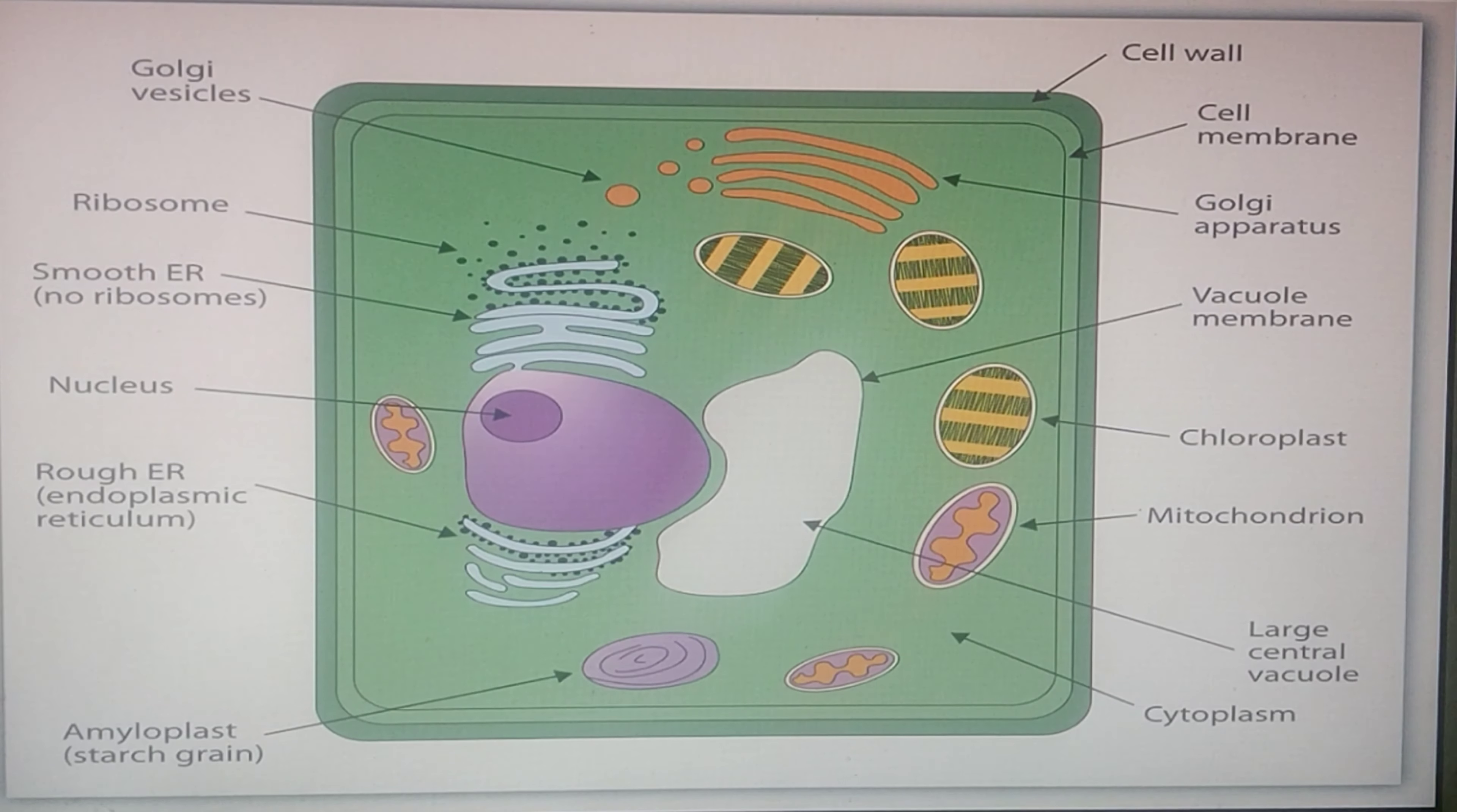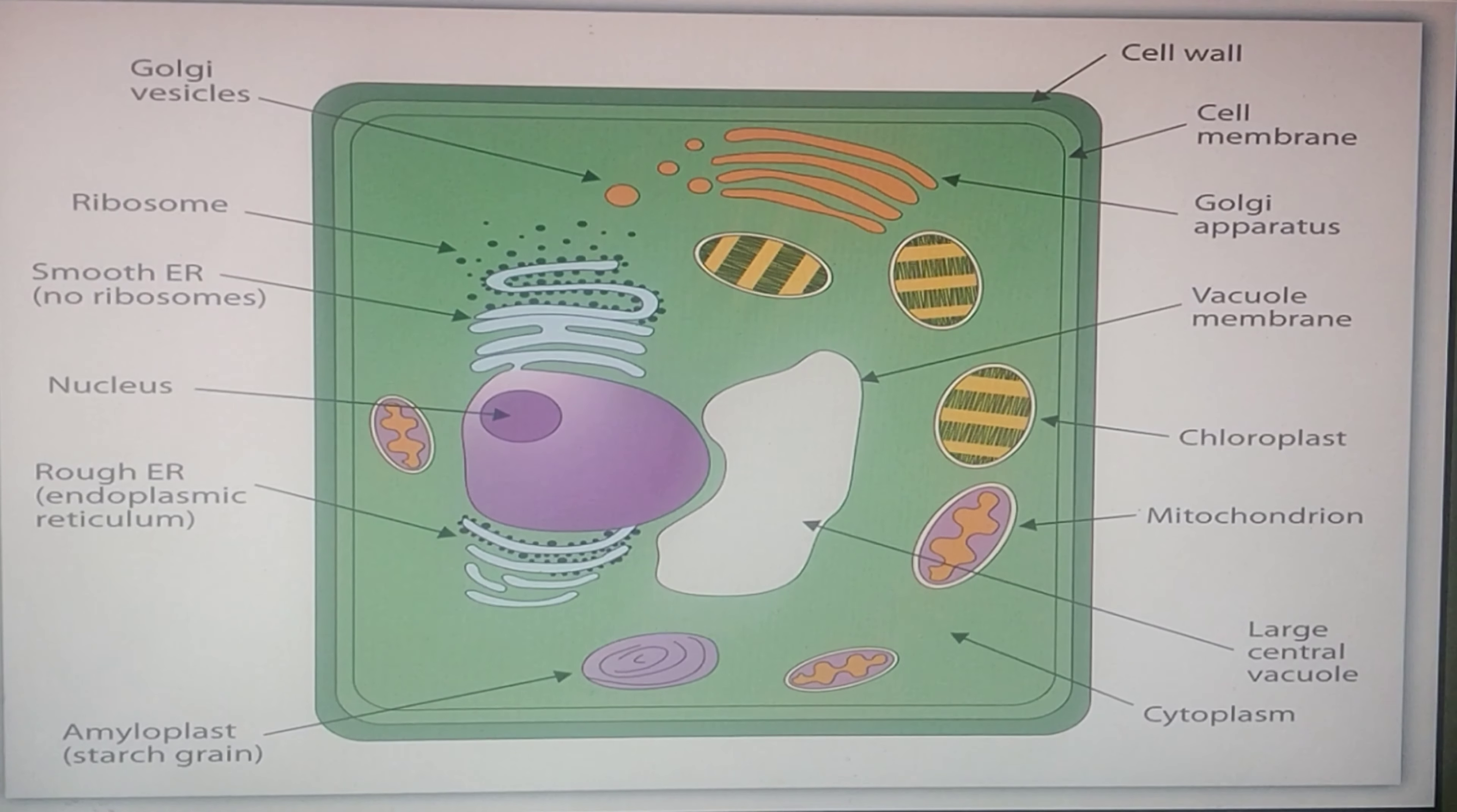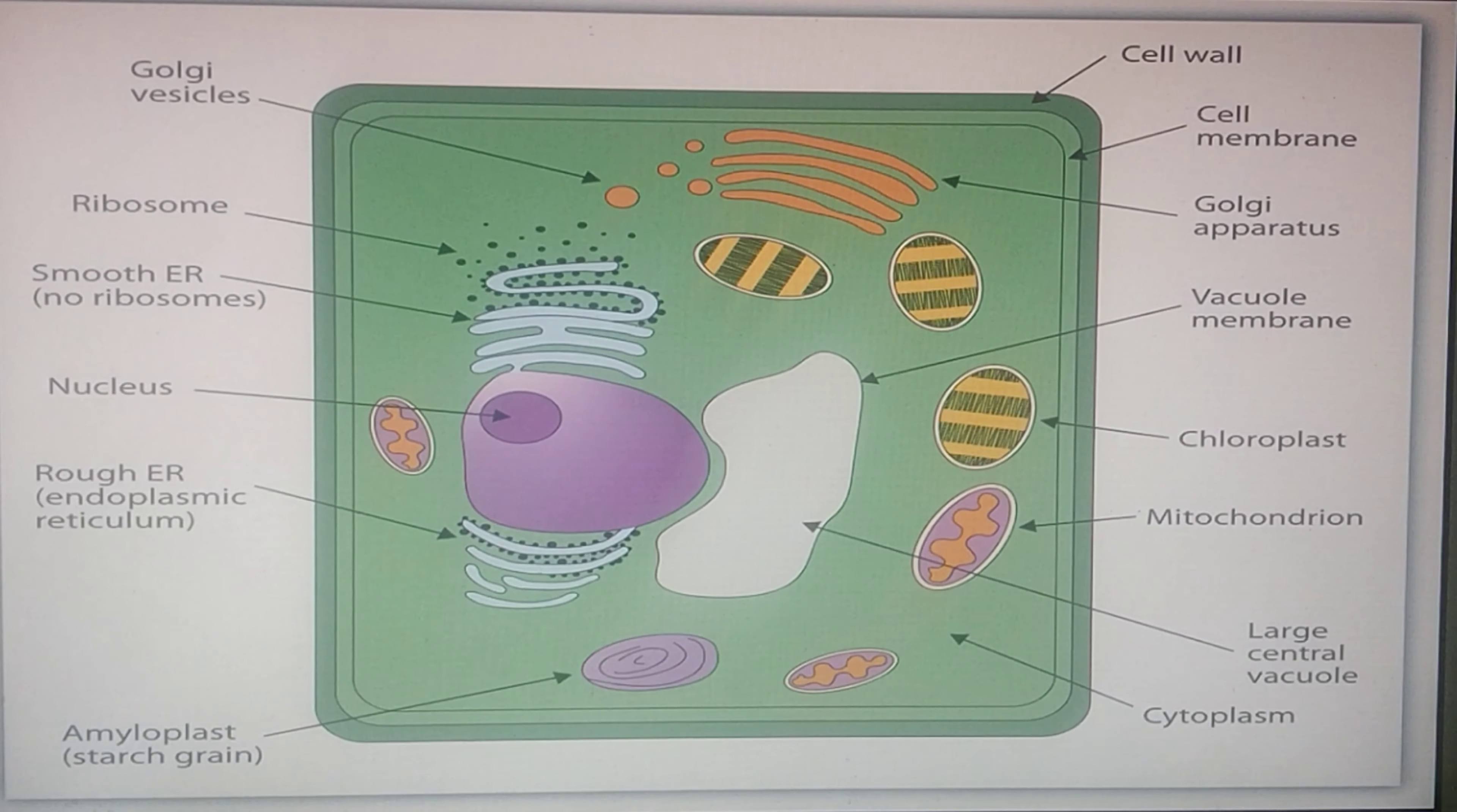And the most notable are the chloroplasts which contain chlorophyll. This is the green pigment. This green colored pigment absorbs sunlight and allows the plant to make its own food by photosynthesis.